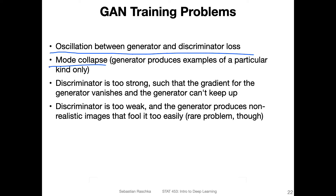Another very common problem is mode collapse, which essentially means that the generator will learn how to generate a particular type of data that is particularly good at fooling the discriminator. Usually when you see that the generator is only producing one kind of image, this is due to mode collapse, where the generator exploits a weakness in the discriminator.